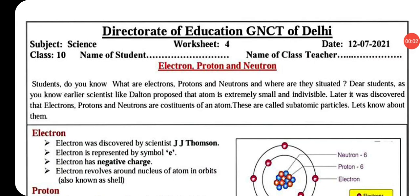Hello dear students, today we will discuss worksheet number four: electron, proton and neutron. Do you know what electrons, protons and neutrons are, and where they are situated? Earlier, scientists like Dalton proposed that the atom is extremely small and indivisible. Later it was discovered that electrons, protons and neutrons are constituents of an atom — these are called subatomic particles.